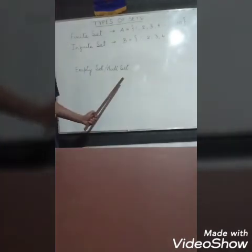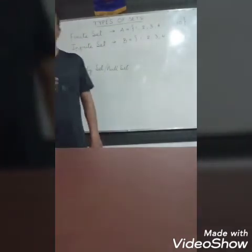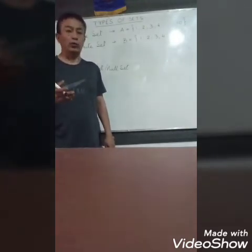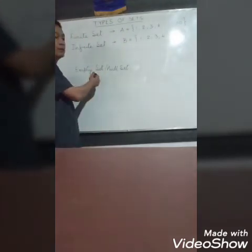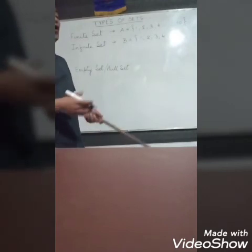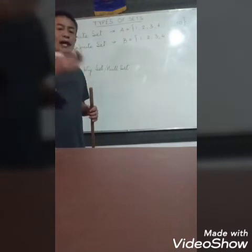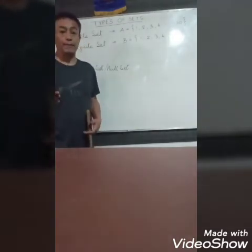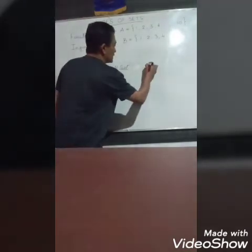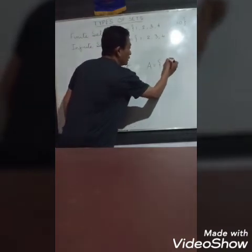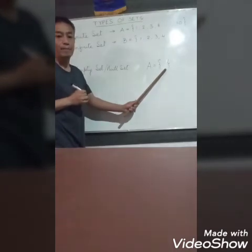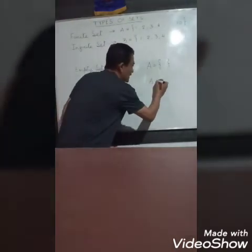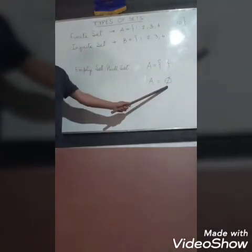Coming to empty set, which we also call a null set. What is an empty set? Let's say you are told: all the boys in class 6A who are 10 meters tall. We don't have anybody who is 10 meters tall, therefore this becomes an empty set — there are no names there at all. Or something like counting numbers between 2 and 3 — there are no counting numbers between 2 and 3, because right after 2 comes 3. Empty sets are written as set A equal to empty curly brackets — nothing inside the bracket. Or we can write it as set A is a null set, using the null set symbol.